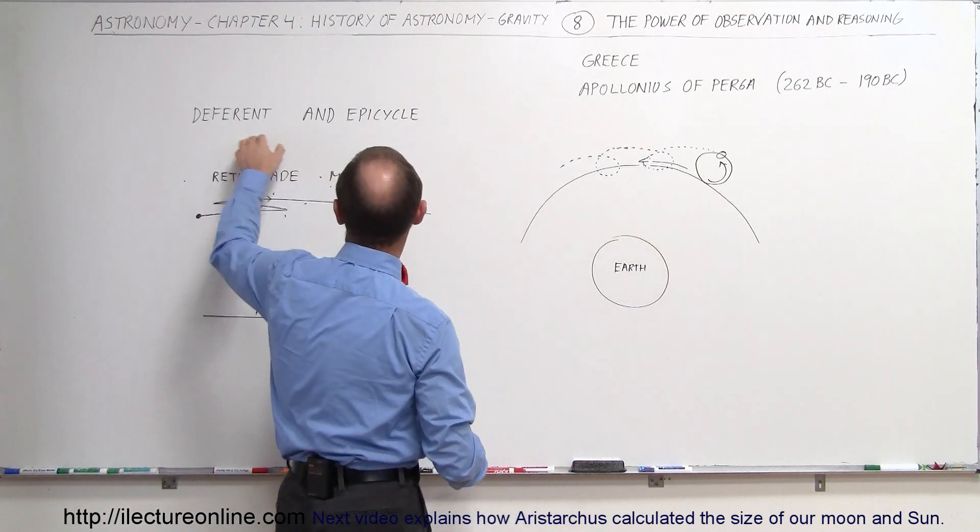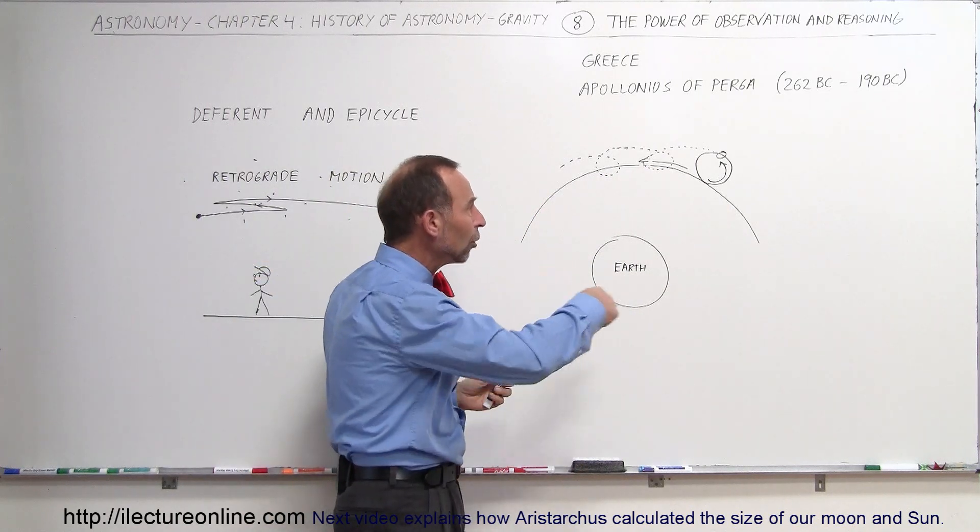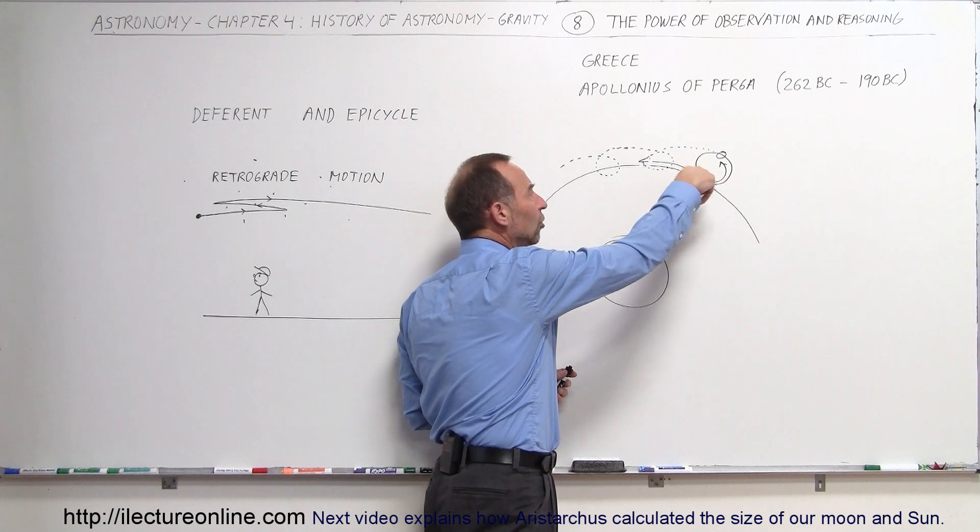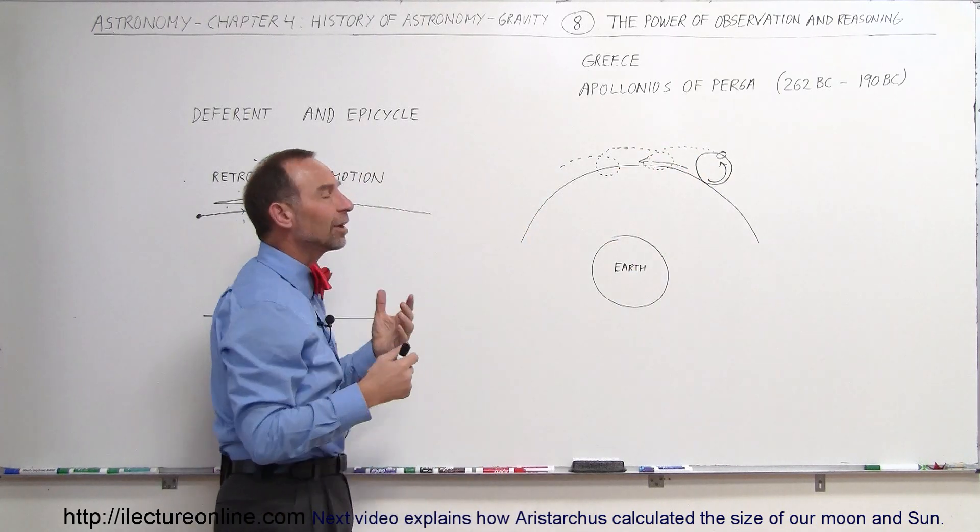and that trajectory would be called a deferent, the main trajectory around the earth. But then there would also be this secondary motion like a circle motion going around like that in circles, and we call that epicycles.